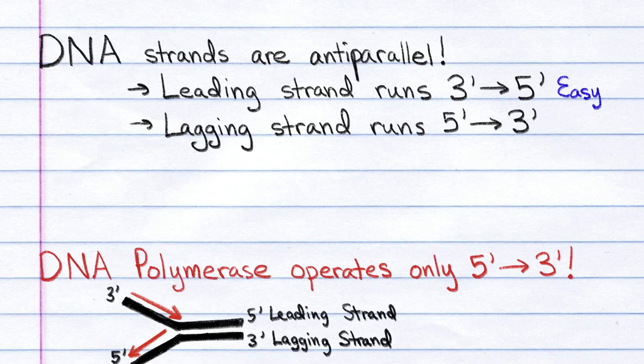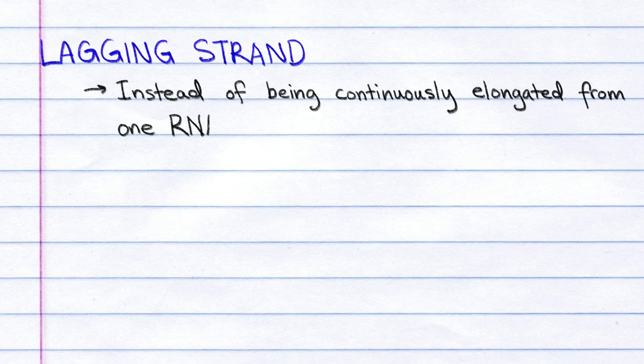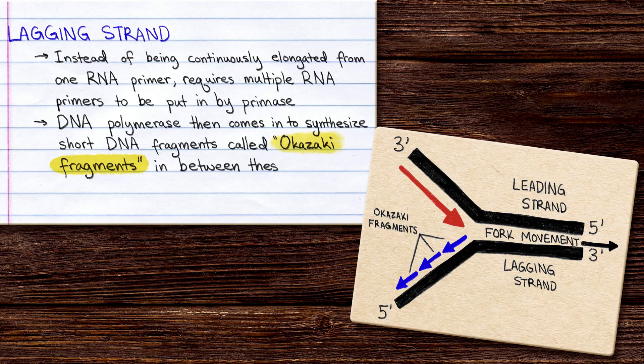It has no trouble synthesizing DNA on the leading strand, whose complementary strand runs 5' to 3', but in contrast, the lagging strand is much harder to deal with. It runs 5' to 3', so its complementary strand needs to be synthesized 3' to 5'. Instead of being continuously elongated from one RNA primer, this strand requires multiple RNA primers to be put in by primase. DNA polymerase then comes in to synthesize short DNA fragments called Okazaki fragments in between these primers.